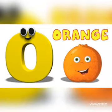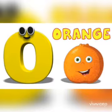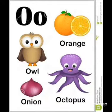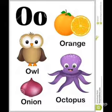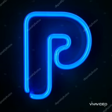The next letter is O. Children, say O for orange, O for owl, O for onion, and O for octopus.